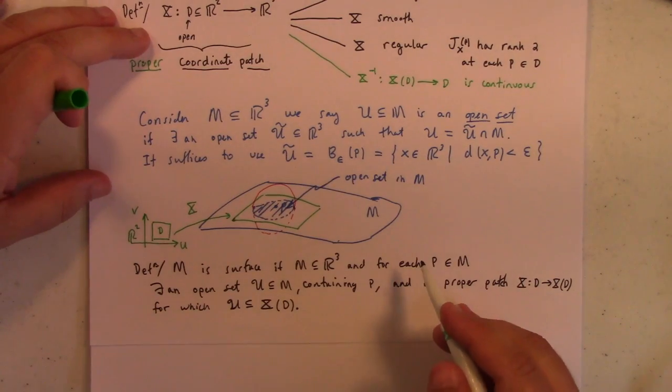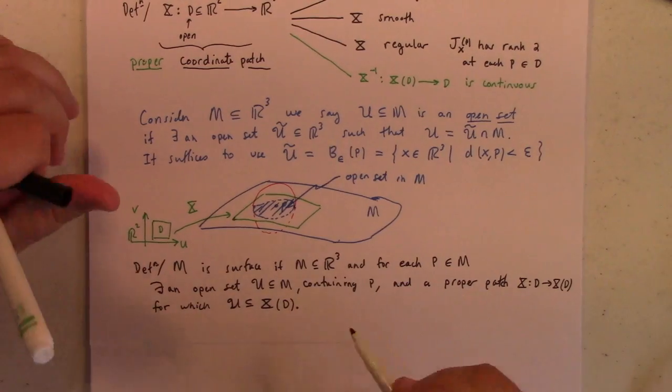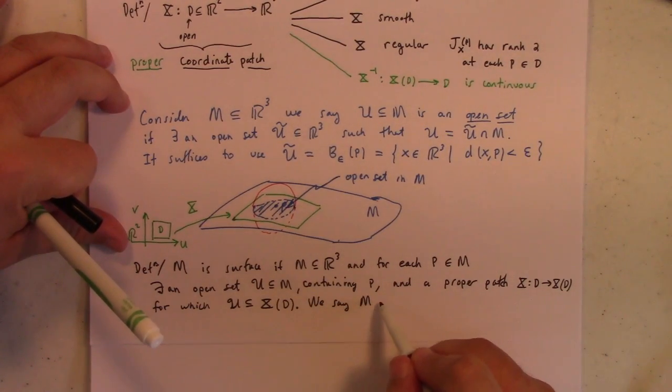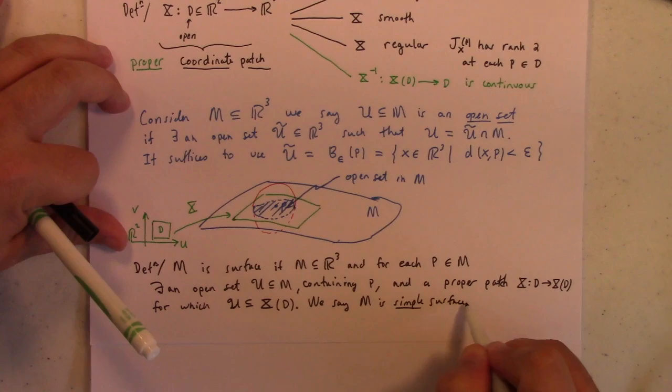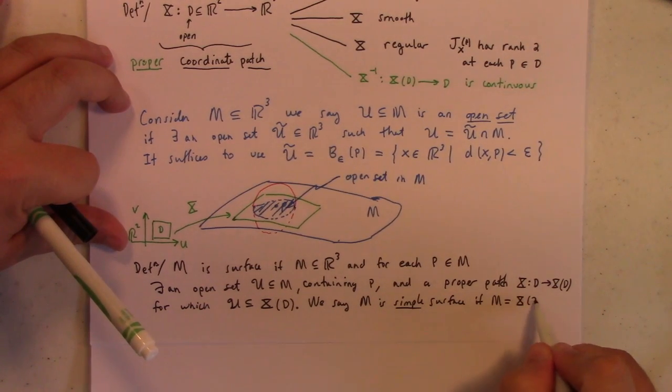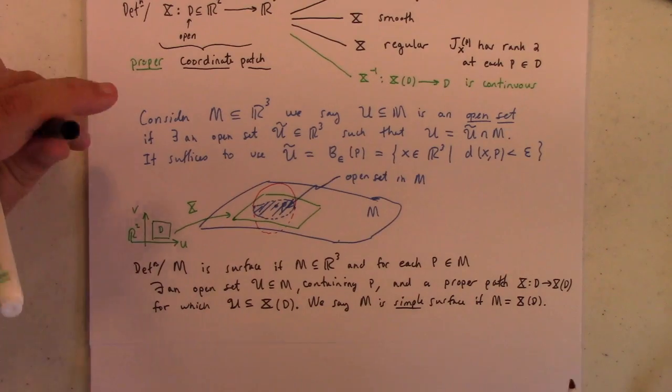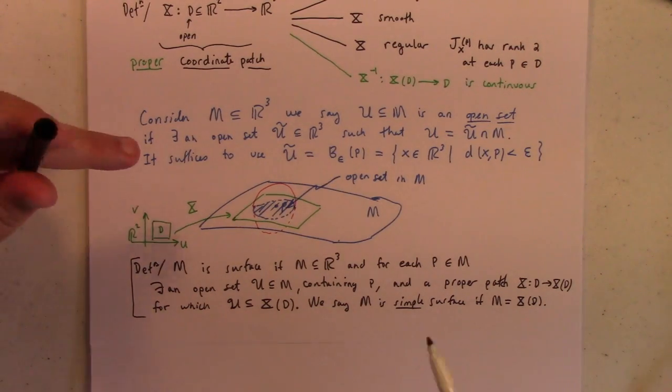Oh, by the way, we say that the surface is simple. We say M is simple surface if M is actually equal to X of D for some proper patch. So, if you just have one coordinate patch that covers the whole surface, then we say it's a simple surface. A lot of the surfaces we think about in Calculus 3 are simple surfaces.